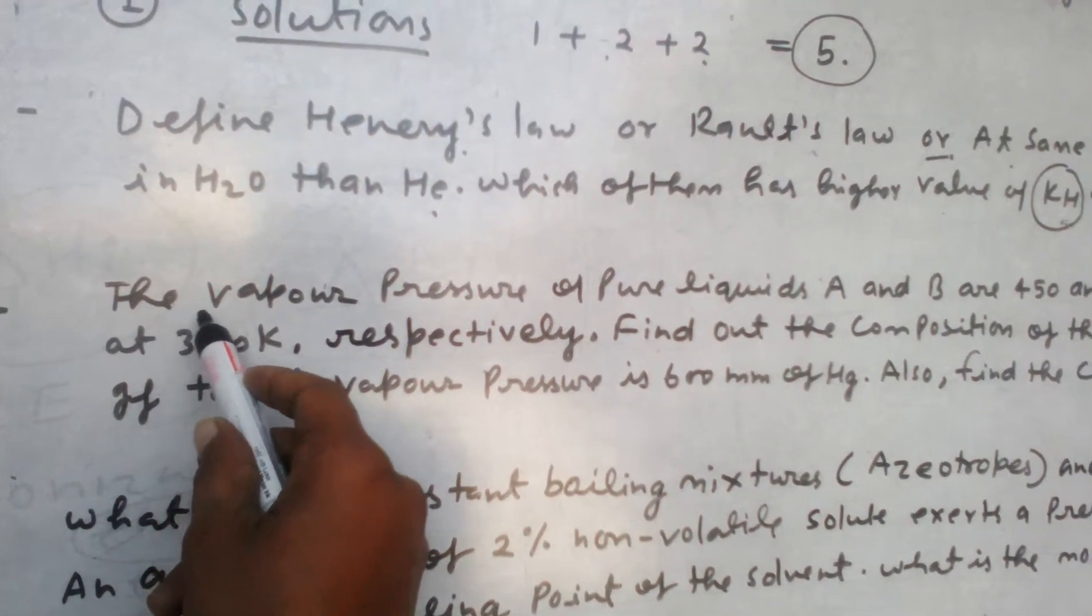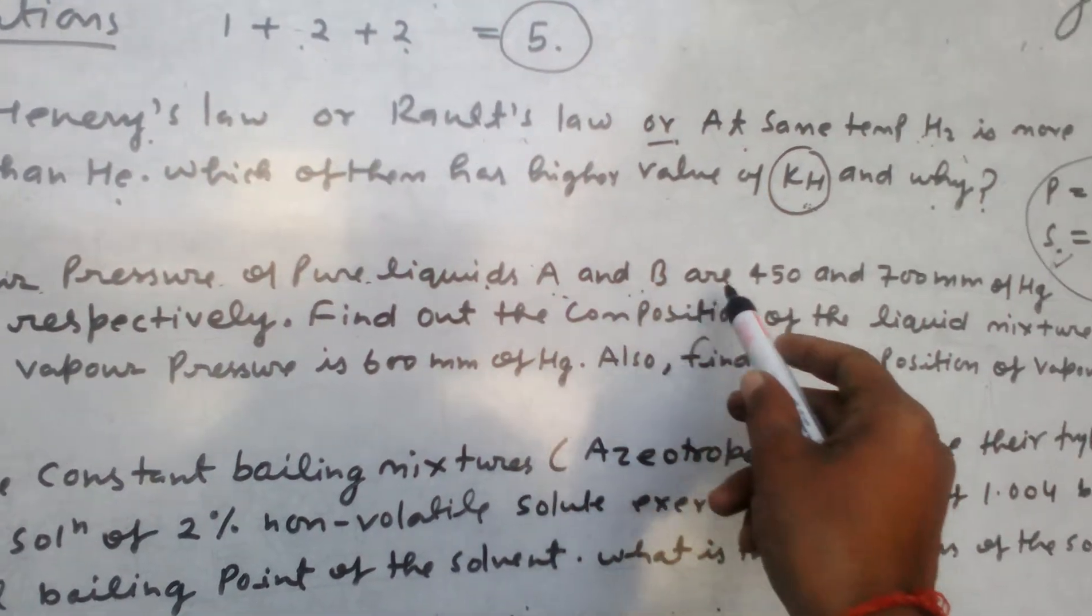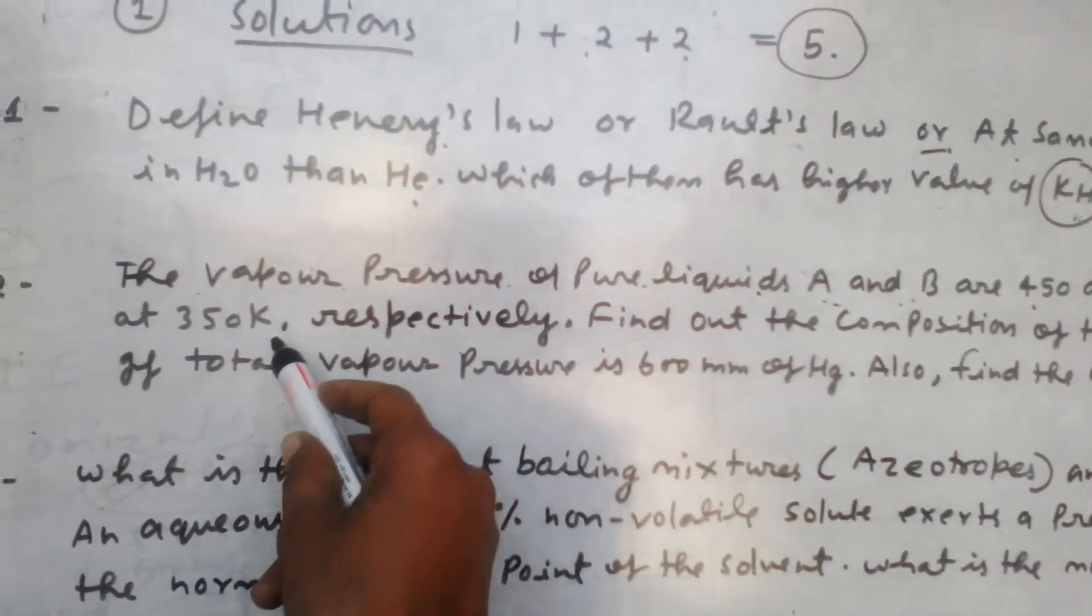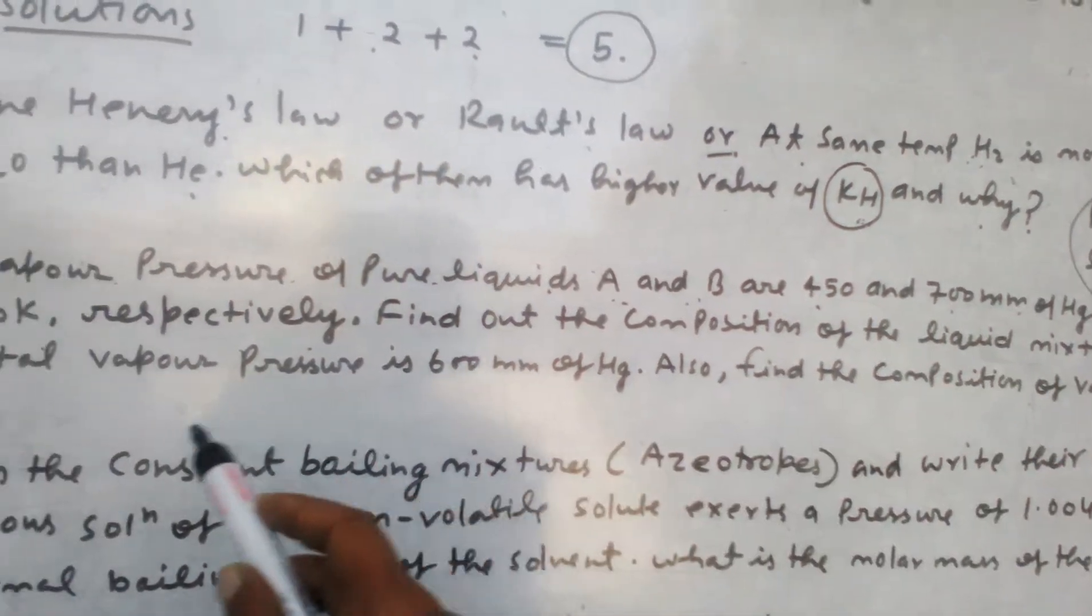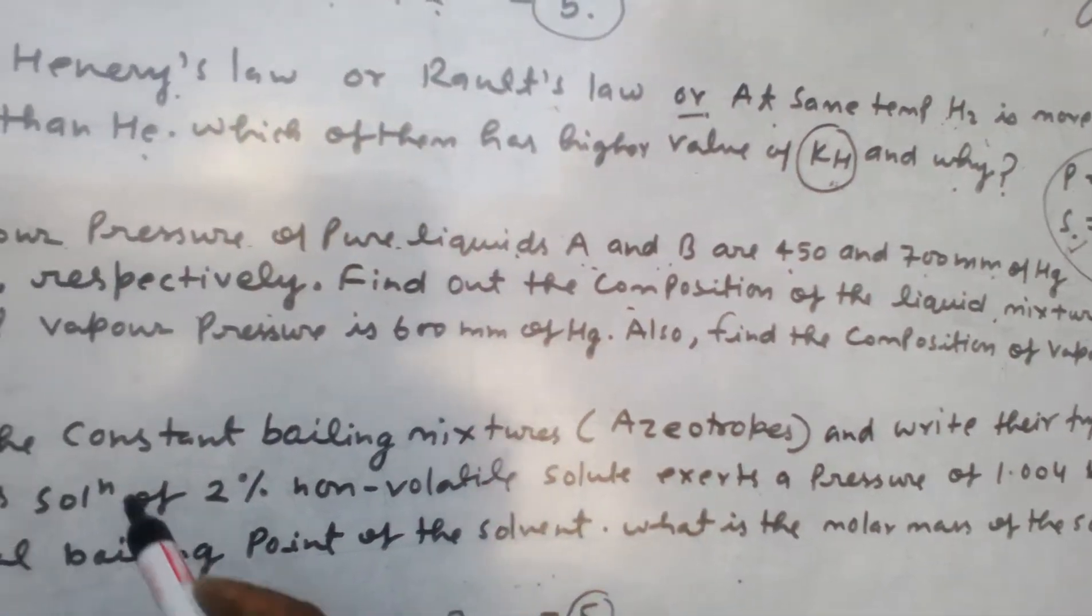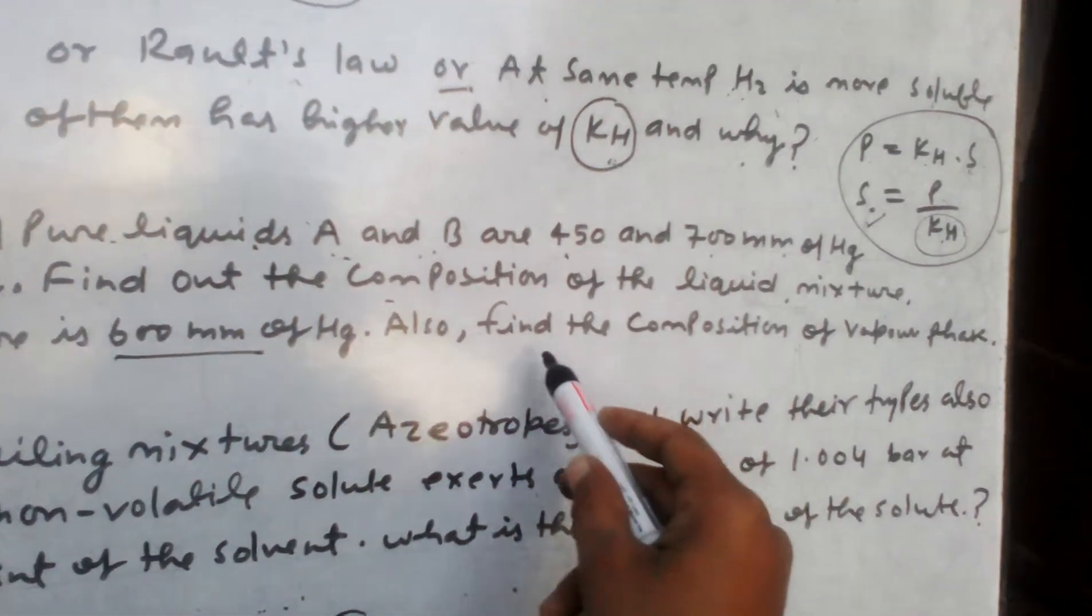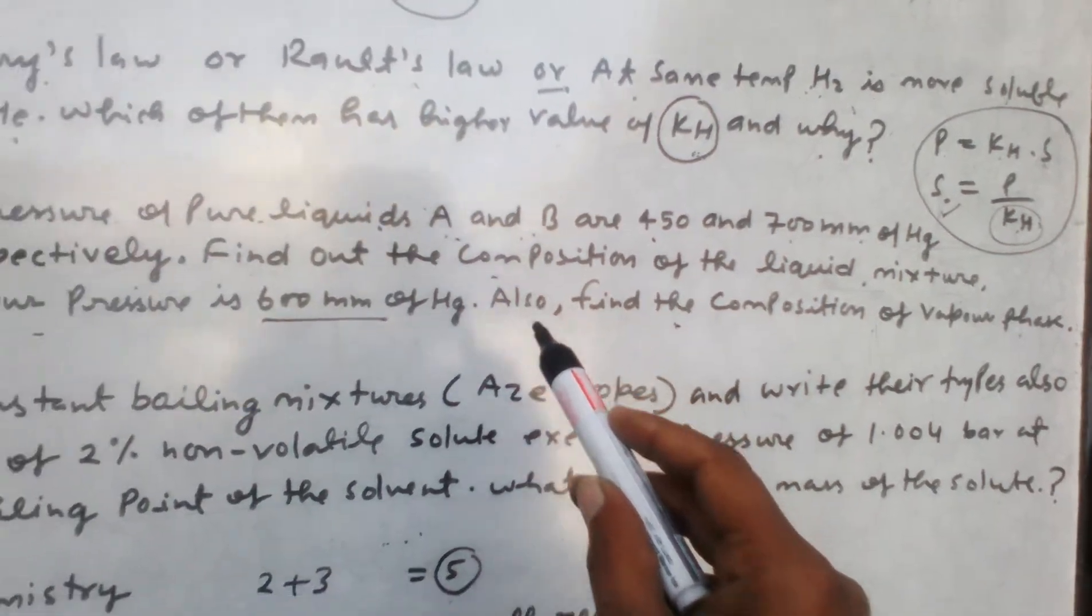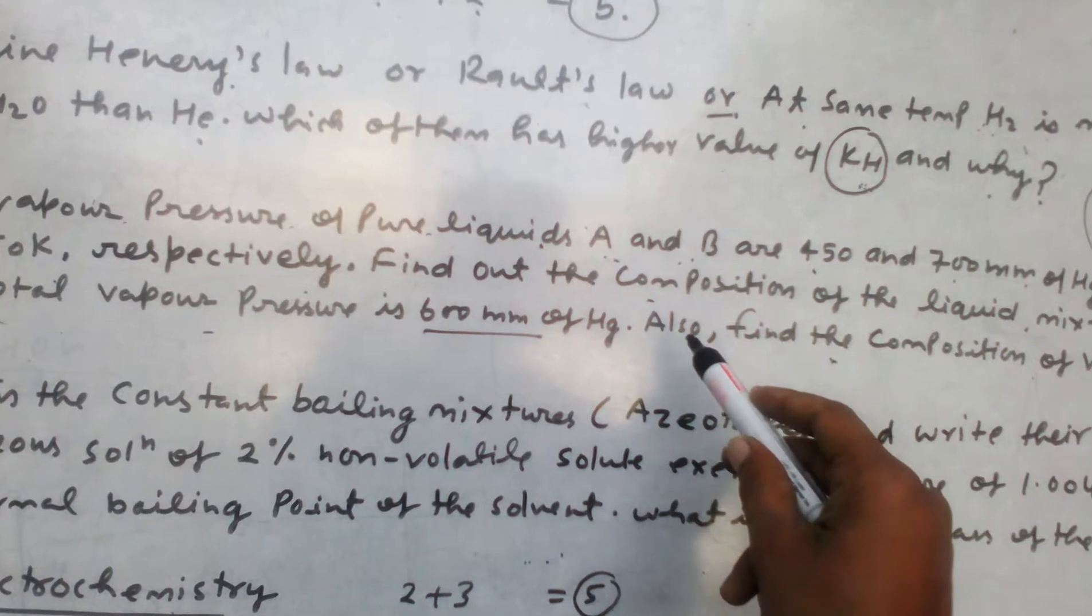The second question: the vapor pressure of pure liquids A and B are 450 and 700 mm of mercury at this temperature, respectively. Find out the composition of the liquid mixture if total vapor pressure is 600 mm of mercury. Also find the composition of the vapor phase. This question is very important and it gets in your exam test.